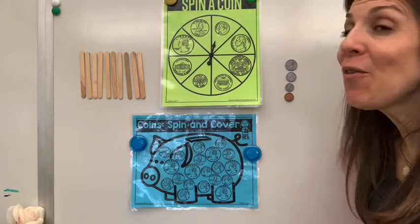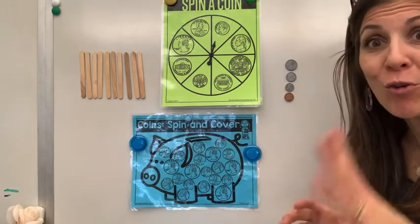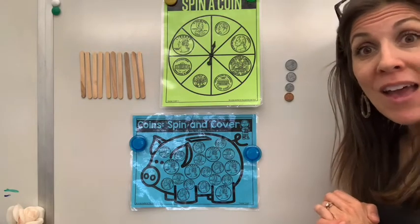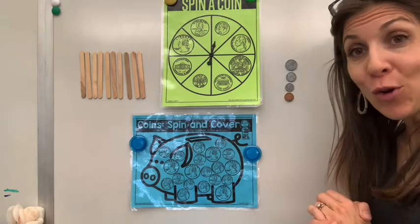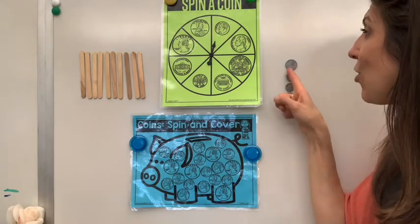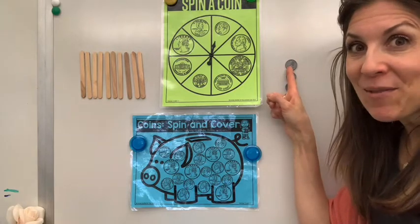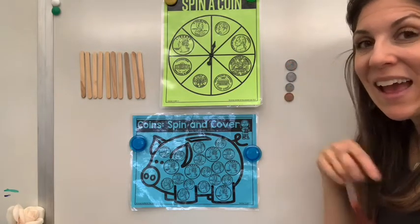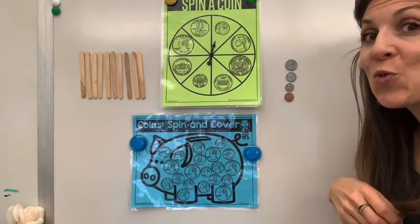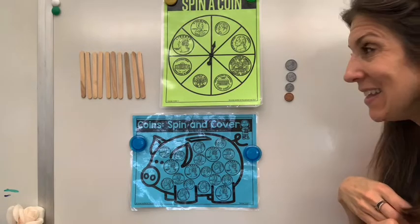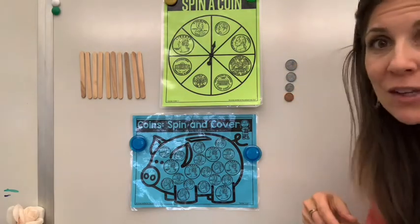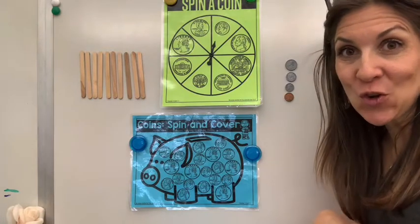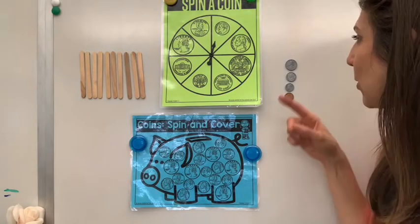Today we're gonna review our four coins because now we know our four coins, right? We know — what is the name of that one? The quarter, that is worth 25 cents. Good job. And who is on our quarter? Our first president, George Washington. Very good.